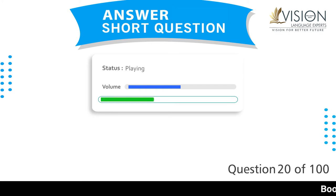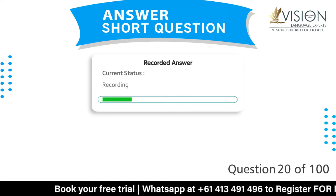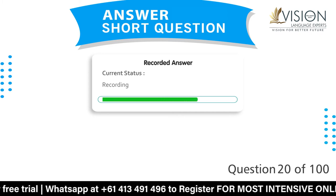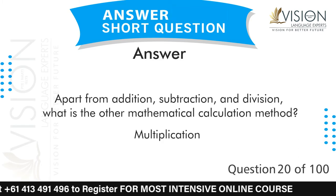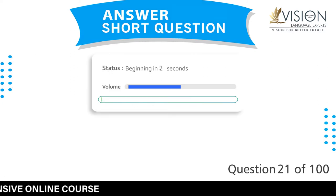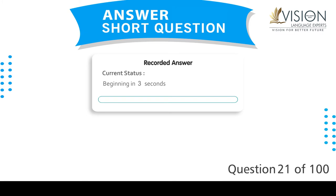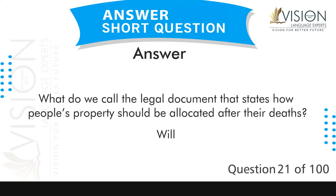Apart from addition, subtraction, and division, what is the other mathematical calculation method? Multiplication. What do we call the legal document that states how people's property should be allocated after their deaths? Will.